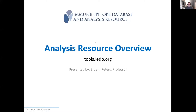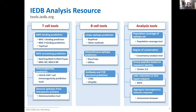The analysis resource is a companion site to the IEDB. The broad suite of tools we have is subdivided into three main categories: the T-cell epitope prediction related tools, B-cell epitope prediction related tools, and analysis tools. Each of these subsets of tools are going to be covered in detail tomorrow.